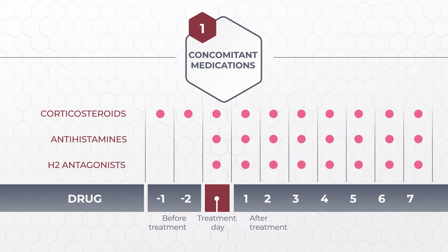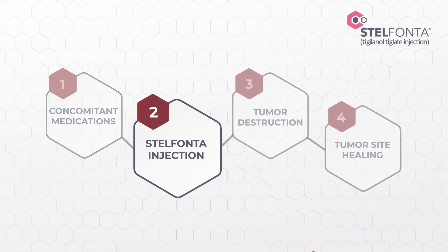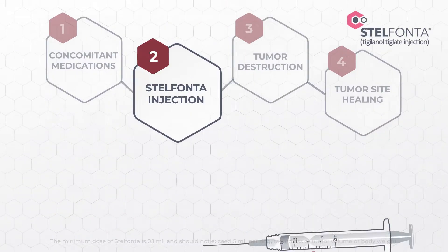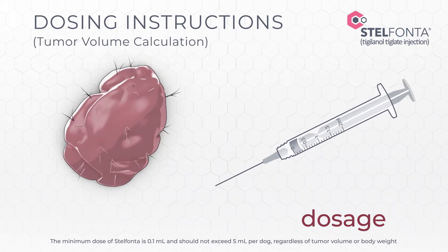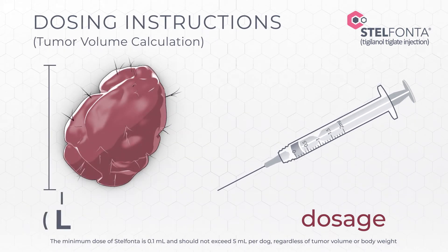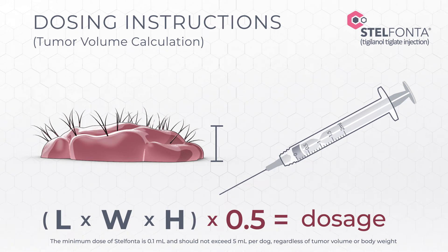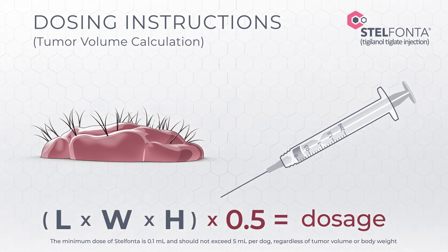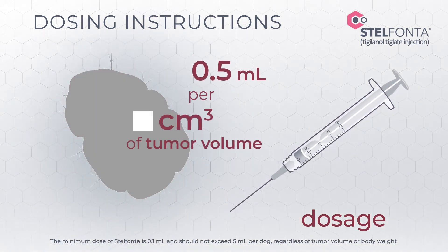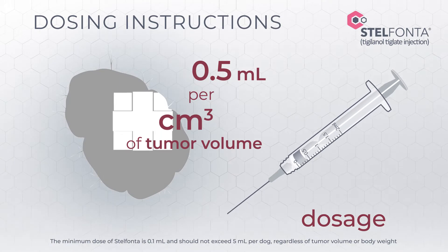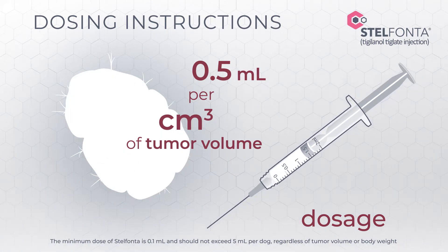These are administered commencing two days prior to treatment. Stelfonta dosage is calculated by multiplying the tumor length times width times height by 0.5, giving the volume of an ellipsoid. The dosage is then calculated as 0.5 milliliters per cubic centimeter of tumor volume.